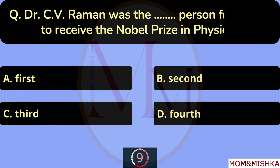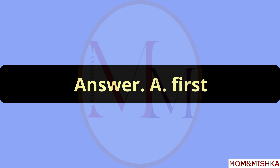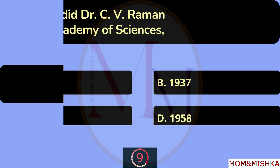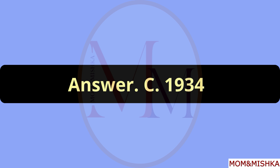Dr. C.V. Raman was the first person from Asia to receive the Nobel Prize in Physics. Option A. When did Dr. C.V. Raman establish the Indian Academy of Sciences, Bangalore? In year 1934. Option C.